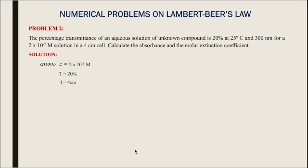The percentage transmittance of an aqueous solution of an unknown compound is 20% at 25 degrees centigrade and 300 nanometer wavelength, for a 2×10^-5 molar solution in a 4 centimeter cell. Calculate the absorbance and molar extinction coefficient.